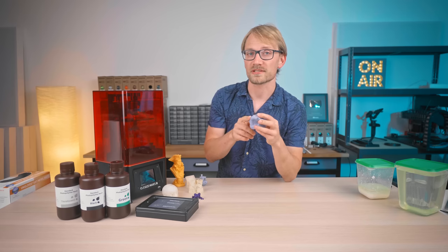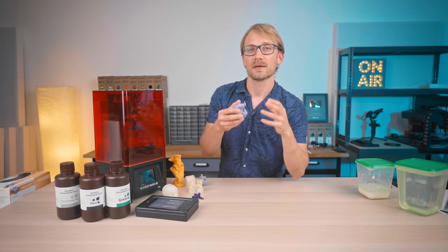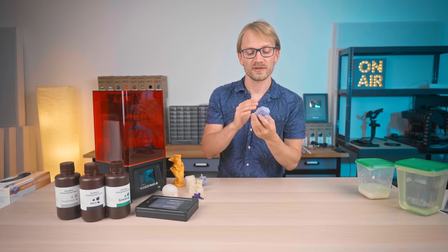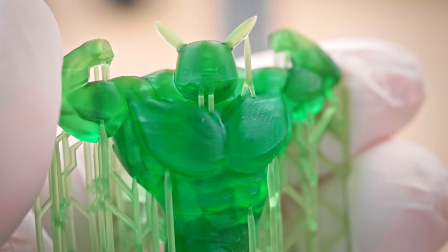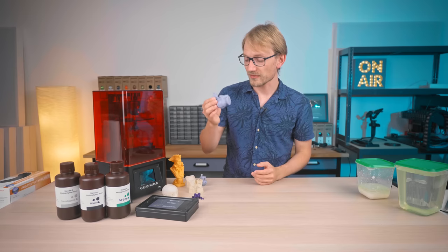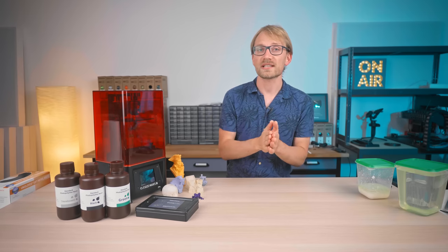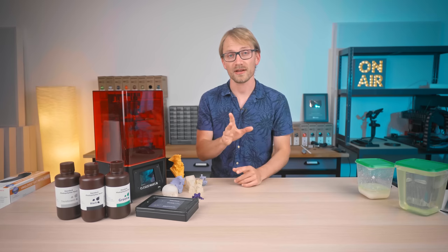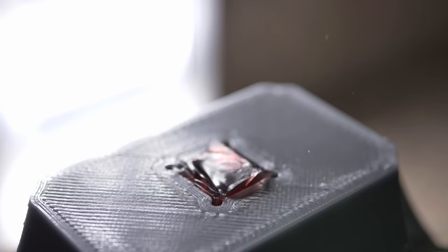Also, because the layers of resin prints are much finer and meld together more, you get that surface finish that looks more like an injection-molded plastic part than a 3D print. And because the parts fuse together so well, resin prints can actually be incredibly strong and tough, but that depends on the exact resin you use.